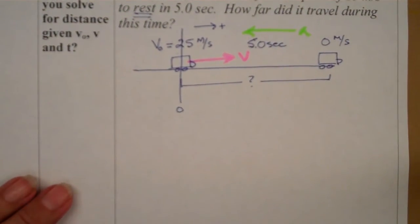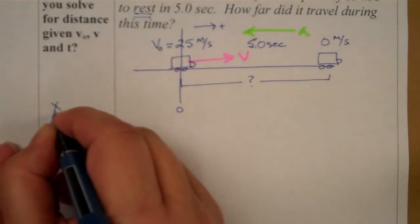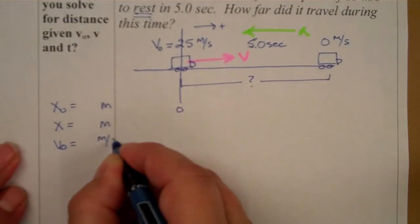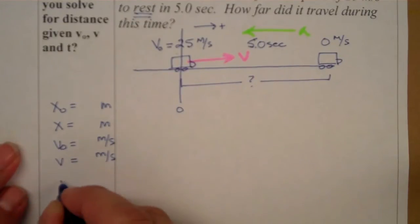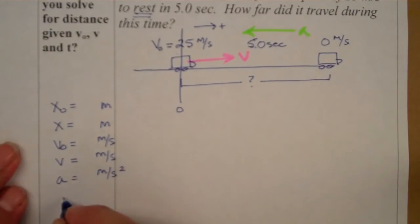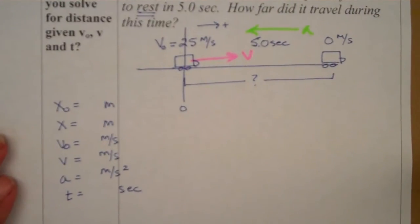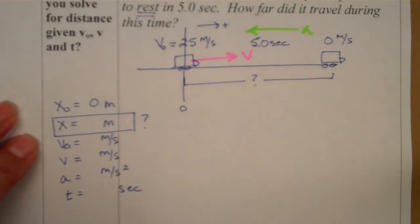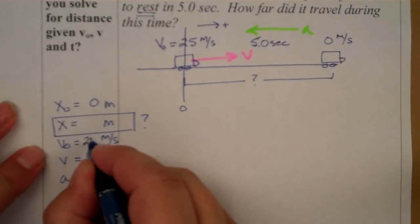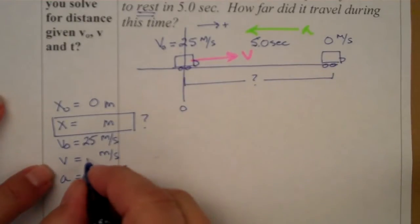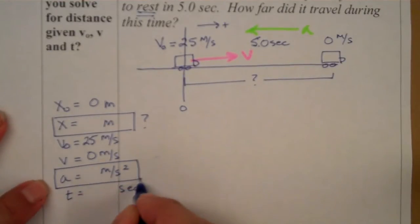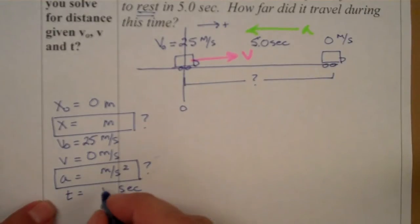Let's look at what our variables are. Initial position in meters: zero. Final position in meters: unknown — that's what we're solving for. Initial velocity: 25 meters per second. Final velocity at rest: 0 meters per second. Acceleration: unknown, so we'll box that as another unknown. Time: 5 seconds.